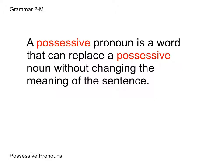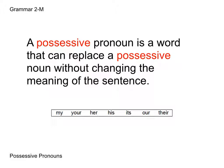Here are your possessive pronouns: my, your, her, his, its, our, and their. Note that with "its," you do not use an apostrophe when it's possessive. When it's a contraction for "it is," then you will use an apostrophe. So remember, don't use an apostrophe for the possessive form.